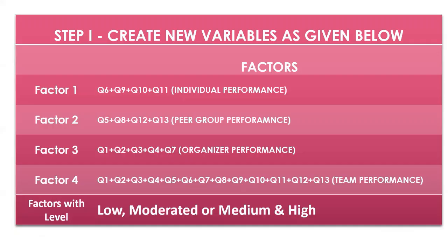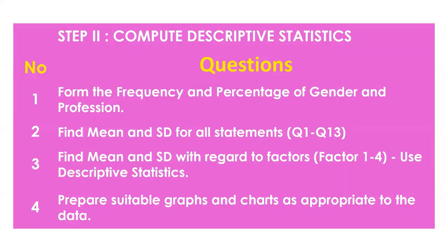Now I'm going to answer questions one through four. The first question is frequency and percentage for gender and profession — only those two. The second one: find mean and standard deviation. The third: find mean and standard deviation for factors one to four. And the last one: charts and graphs.